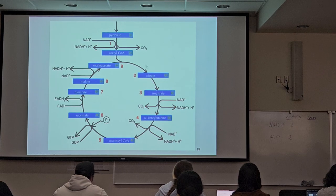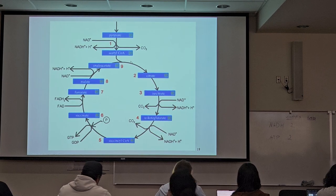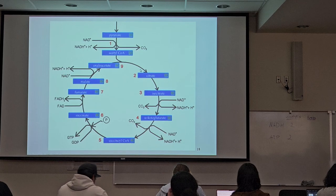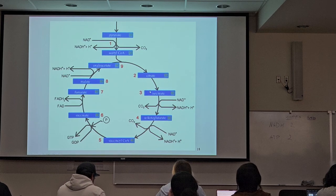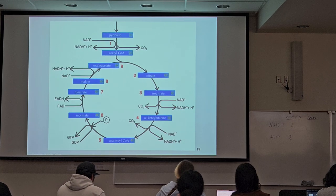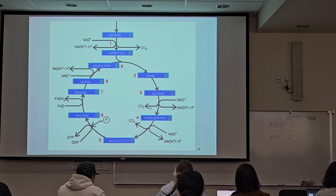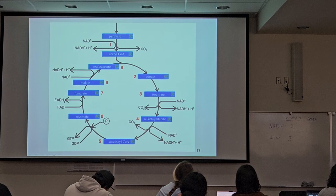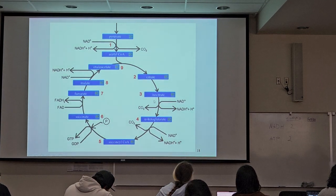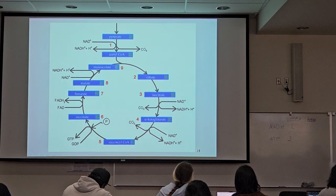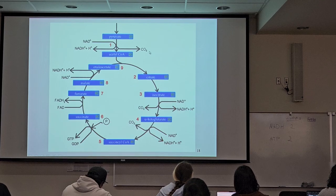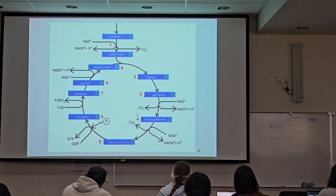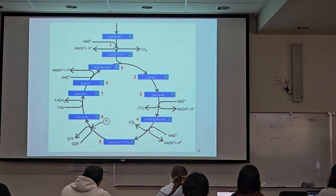So again, you don't need to memorize all these steps. I'm going to point out the important things that are happening here in the Krebs cycle. One of those is we are breaking down the glucose further down to all these CO2s. You can see CO2s are coming out here. So we've got two CO2s here and two CO2s there. So those are the six CO2s.